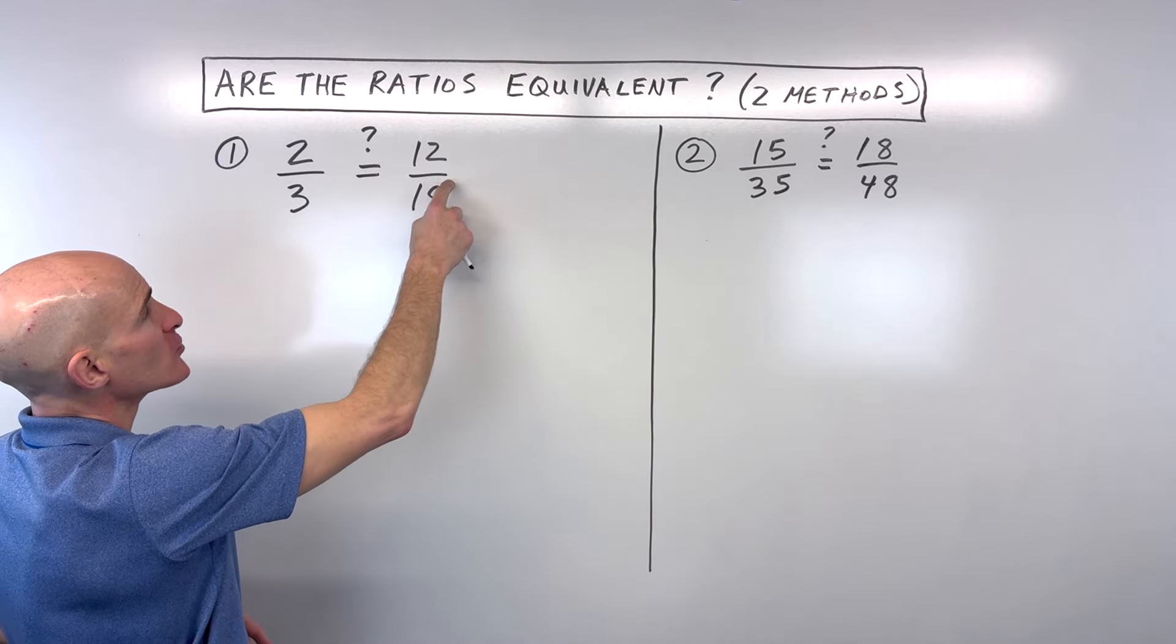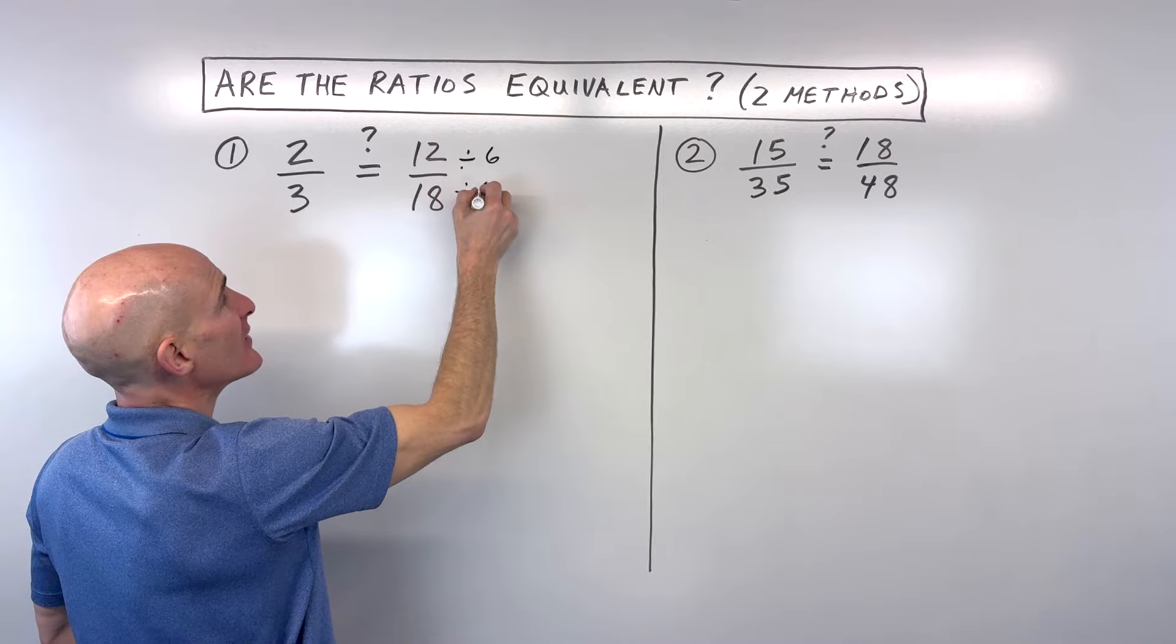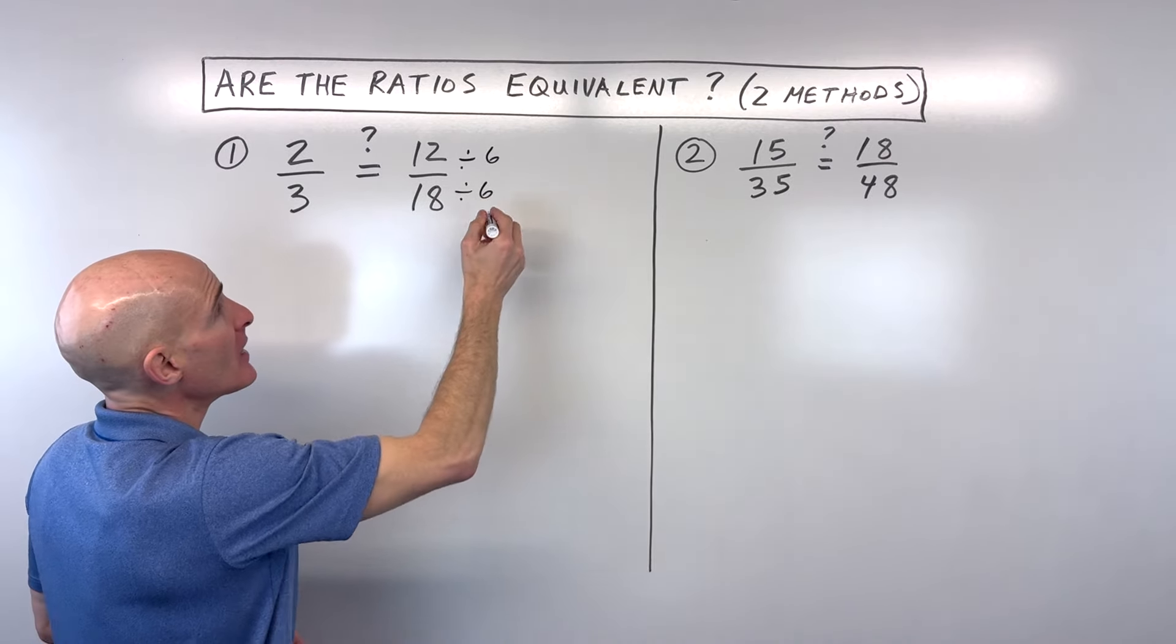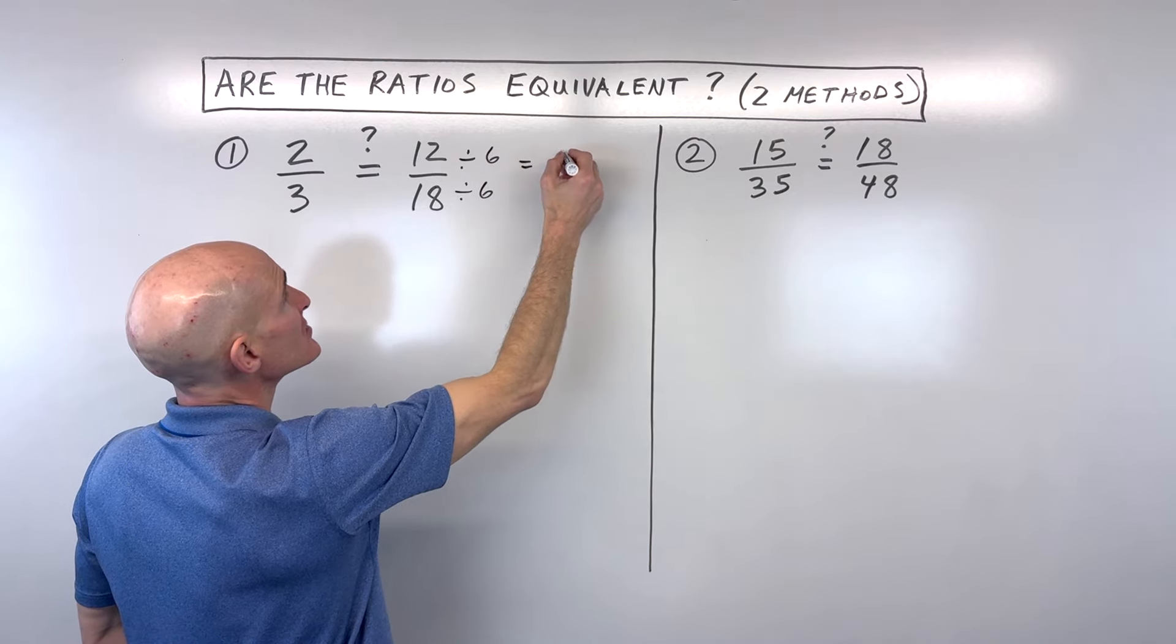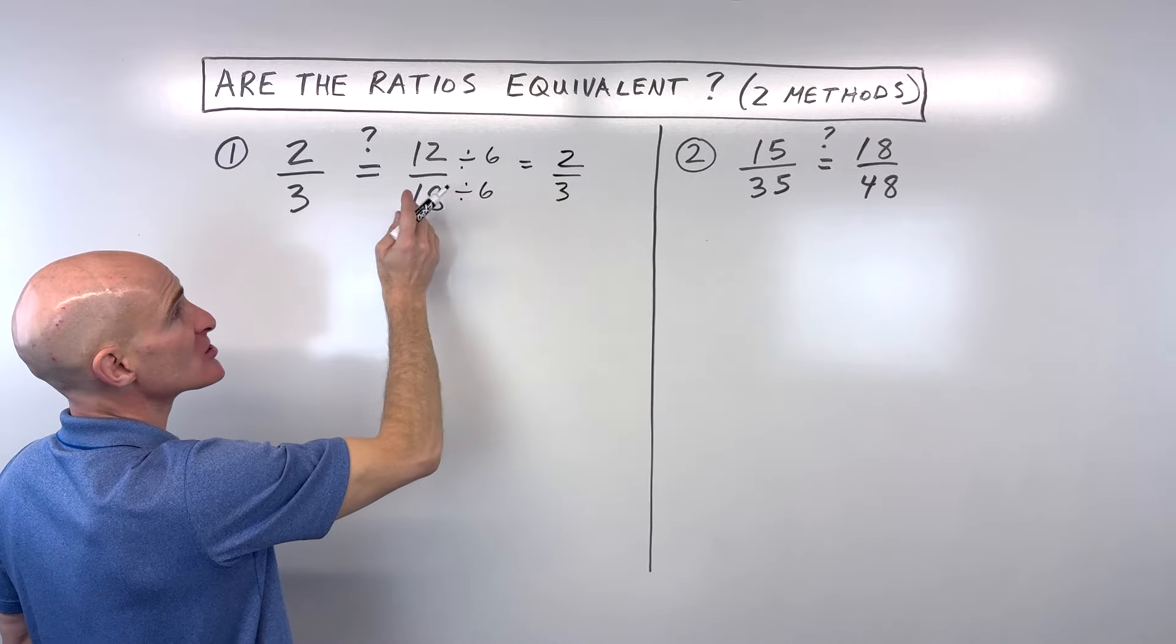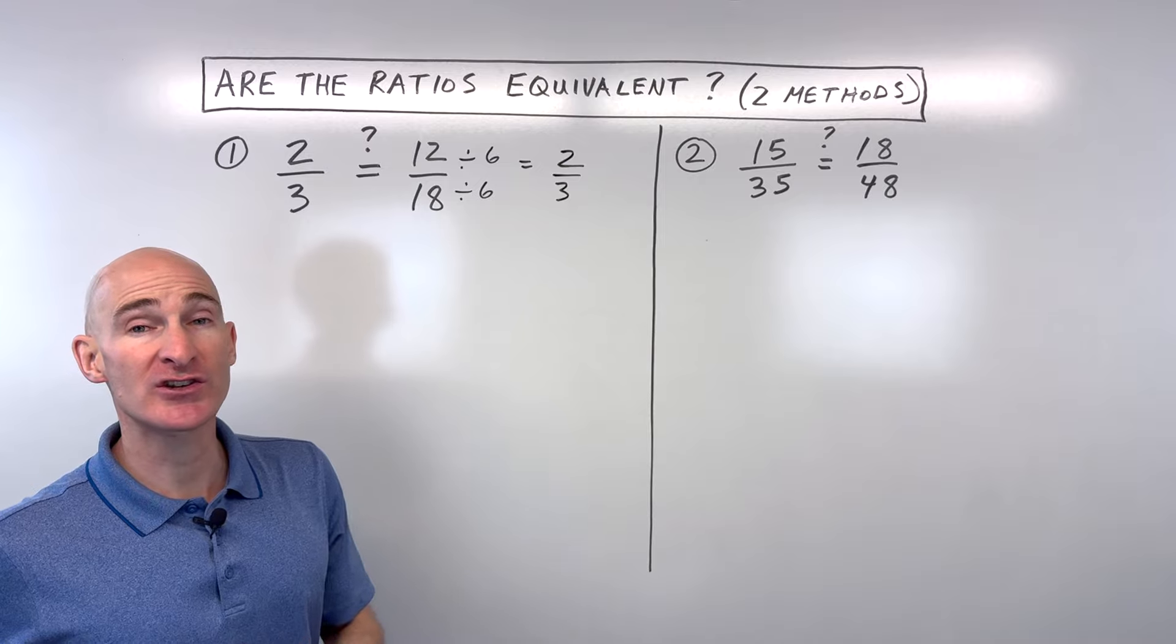So for example, 12 over 18, I can see that I can divide the numerator by six and the denominator by six. You want to make sure you do the same thing to the top and bottom. And you can see we're getting 12 divided by six is two, 18 divided by six is three. And so you can see, yes, two thirds is equal to two thirds. So these two ratios or these two fractions are equal.